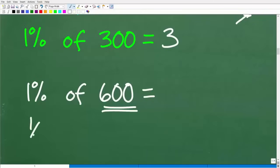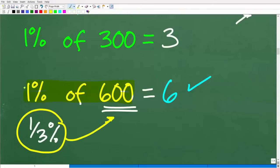The actual question here is one-third percent of 600. But before we do that, let's just make sure we understand what 1% of 600 is. And if you said six, you would be absolutely correct.